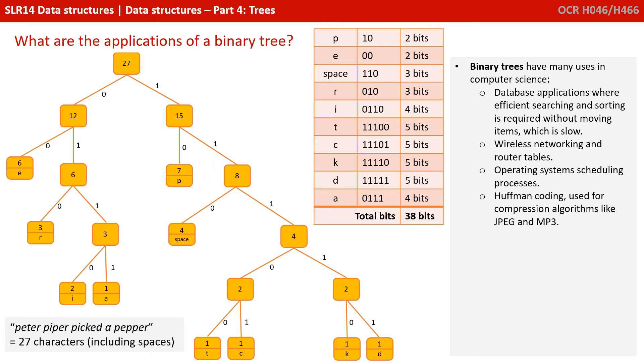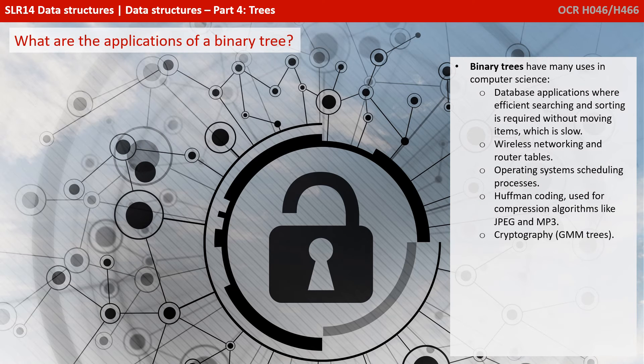Huffman coding used for compression algorithms like JPEG and MP3, and cryptography, for example, GMM trees.